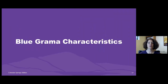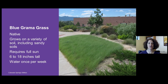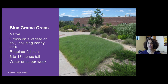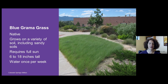Blue grama grass is a native grass that grows throughout Colorado and, unlike buffalo grass, it grows on a wide variety of soils including sandy or rocky soils. It also requires full sun. The blades are a little taller — about 6 to 18 inches — and you can water it once per week or less, just like buffalo grass, for significant water savings.